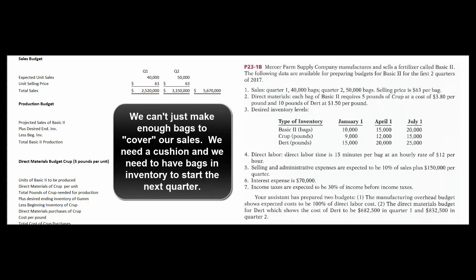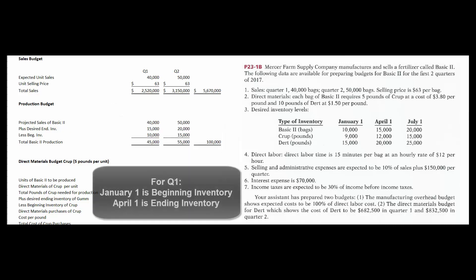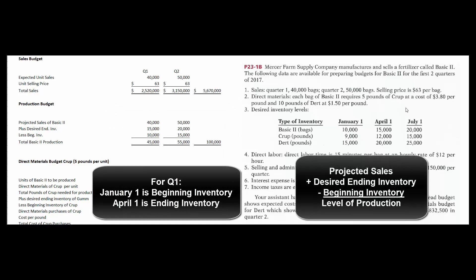Now, for the production budget: if we plan to sell 40,000 bags, you might think all we have to do is make 40,000 bags in quarter one — but that's not exactly true. We might underestimate our sales, so we want a little extra, and we need some bags ready on the first day of quarter two. So we take our projected sales in quarter one, add our desired ending inventory, and subtract the beginning inventory to get our total production. We think we'll sell 40,000 units, we want 15,000 in ending inventory, and we predict 10,000 in beginning inventory — so 40 plus 15 minus 10 means we need to make 45,000 units.